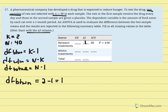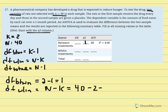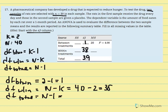DF within equals N minus k: 40 minus 2 equals 38. DF total equals the sum of DF between and DF within, which is 39. Checking: DF total equals N minus 1 equals 40 minus 1 equals 39. That all checks out.